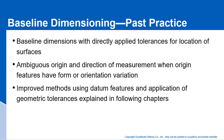There's also a note about baseline dimensioning. Baseline can be good if executed properly, but the author talks about ambiguous origin and direction of measurements when the origin features have form or orientation variation. You really need to use GD&T, because GD&T takes out all the ambiguity. If you're just using baseline dimensions with straight plus or minus tolerances, that's problematic — but if you use GD&T, it removes a lot of the ambiguity.